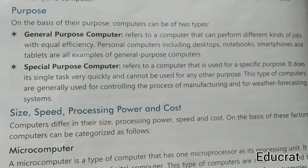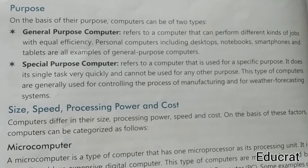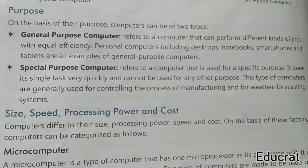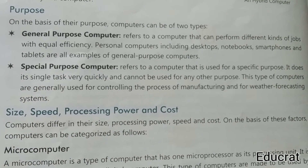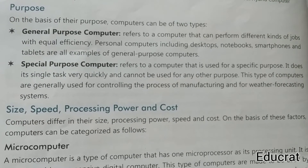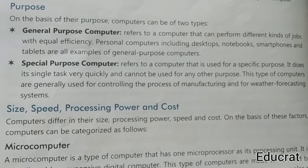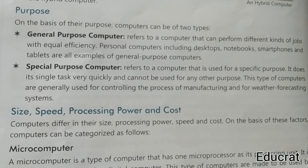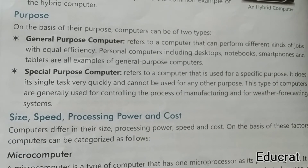Based on purpose, computers are of two types: general-purpose computers and special-purpose computers. A general-purpose computer is a common computer that can perform tasks with equal efficiency. Examples include personal computers, desktops, notebooks, smartphones, and tablets.